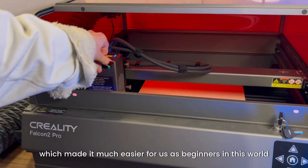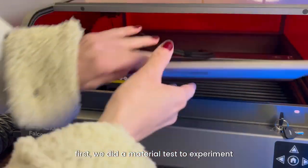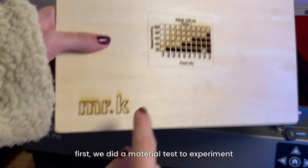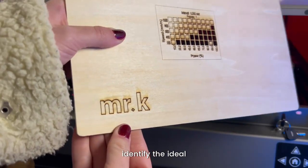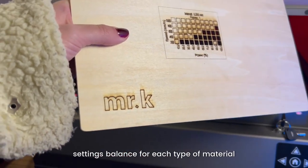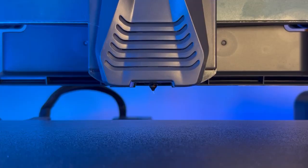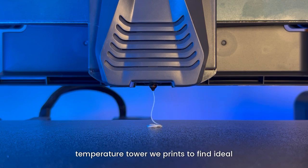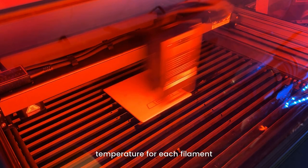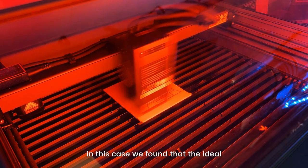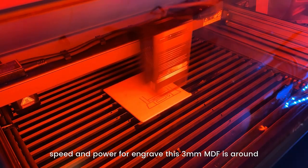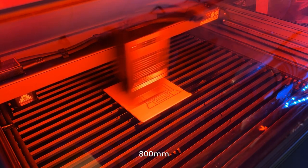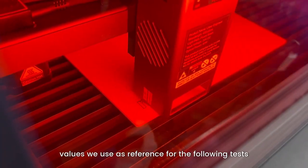First, we did a material test to experiment with different speed and power levels to identify the ideal settings balance for each type of material. This process is very similar to the temperature tower we printed to find the ideal temperature for each filament. In this case, we found that the ideal speed and power for engraving this 3mm MDF is around 800mm and 20%, values we used as reference for the following tests.